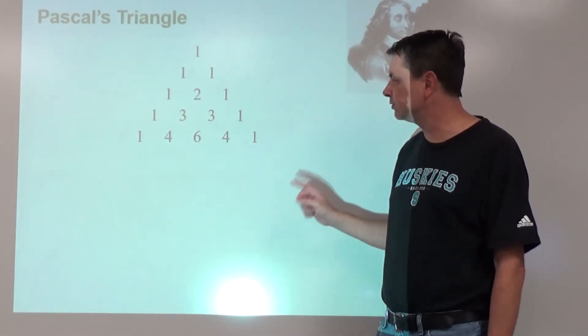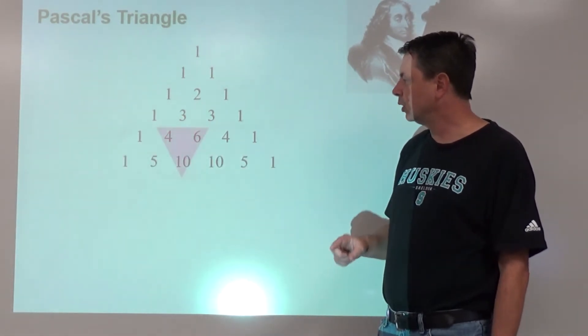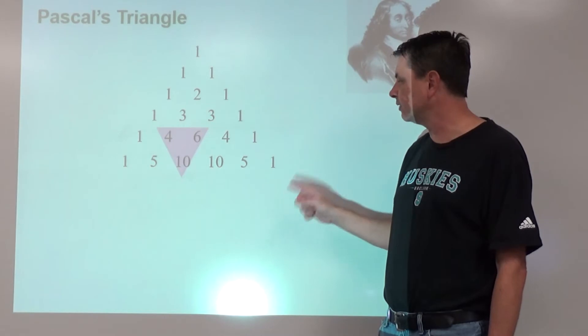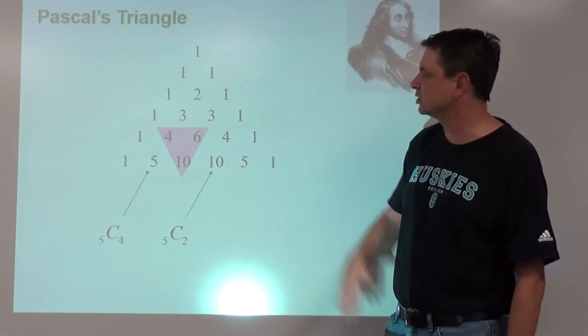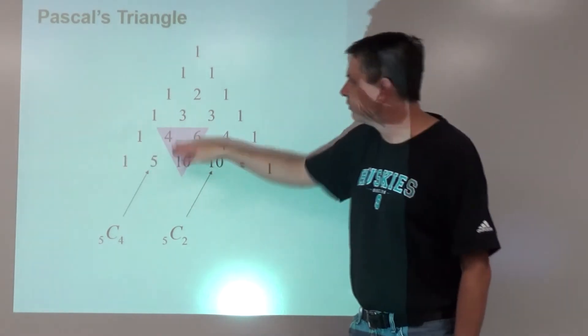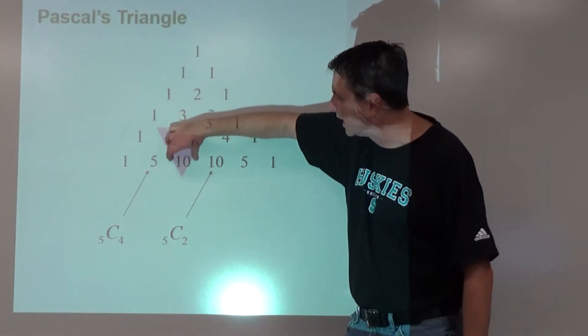One, four, six, four, one. One, five, ten, ten, five, one. Notice that there's some symmetry and so on. So again, we would say that this is row five. Again, the first one is count row one, two, three, four, five.